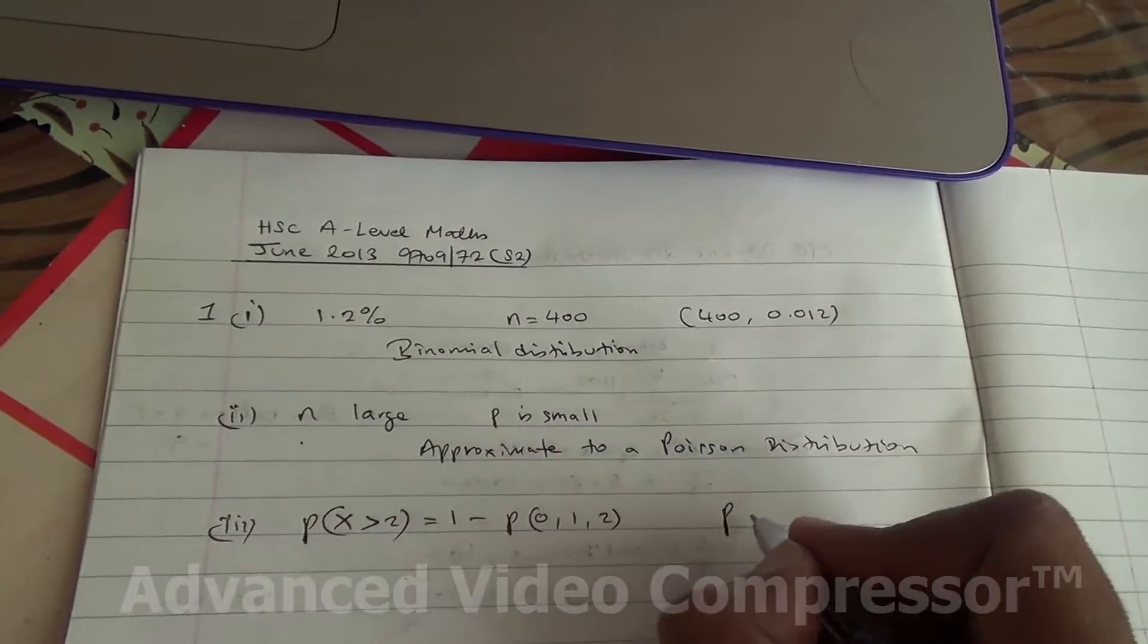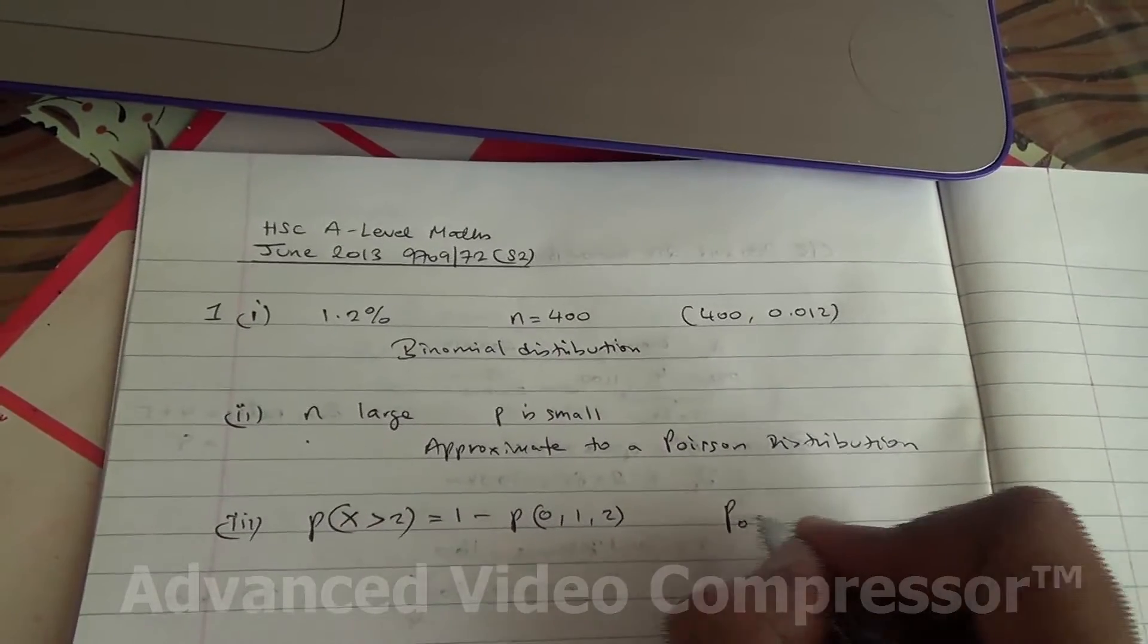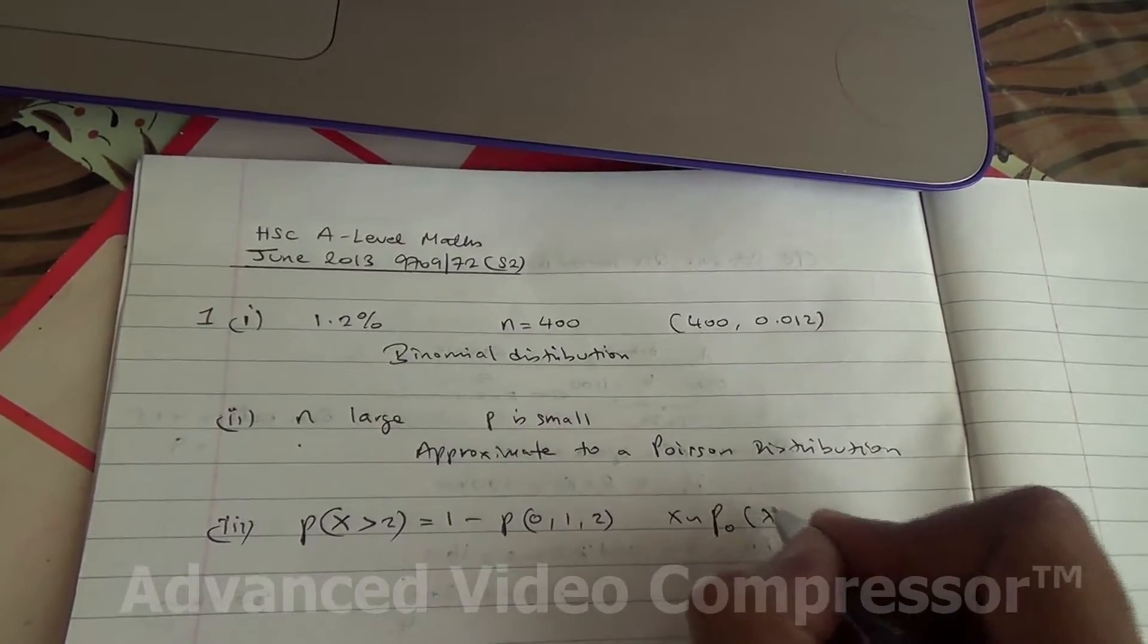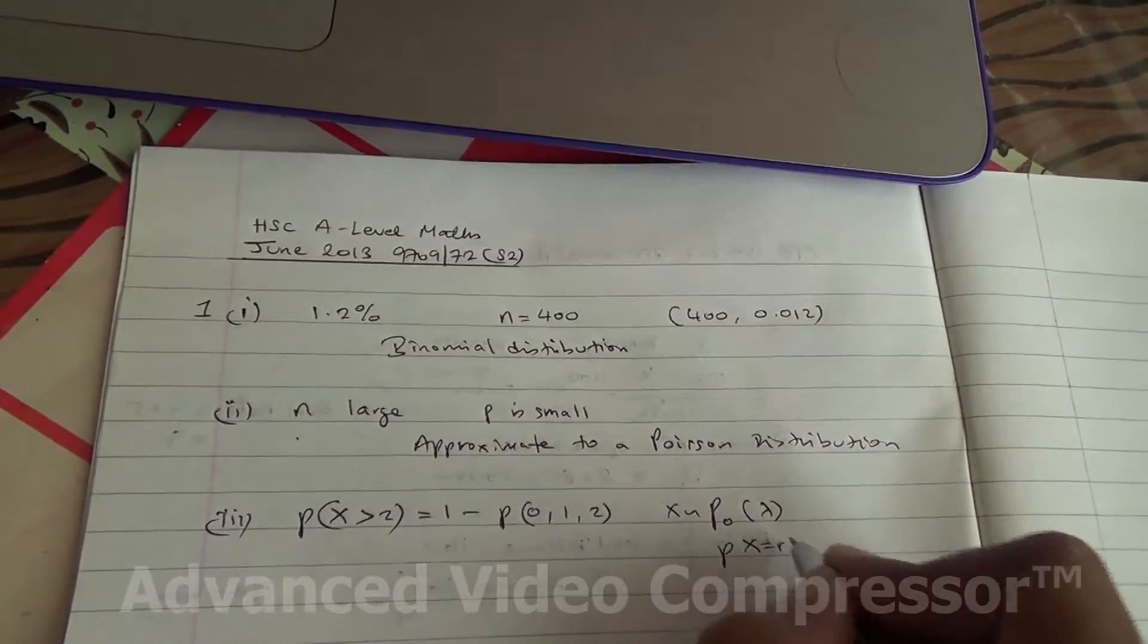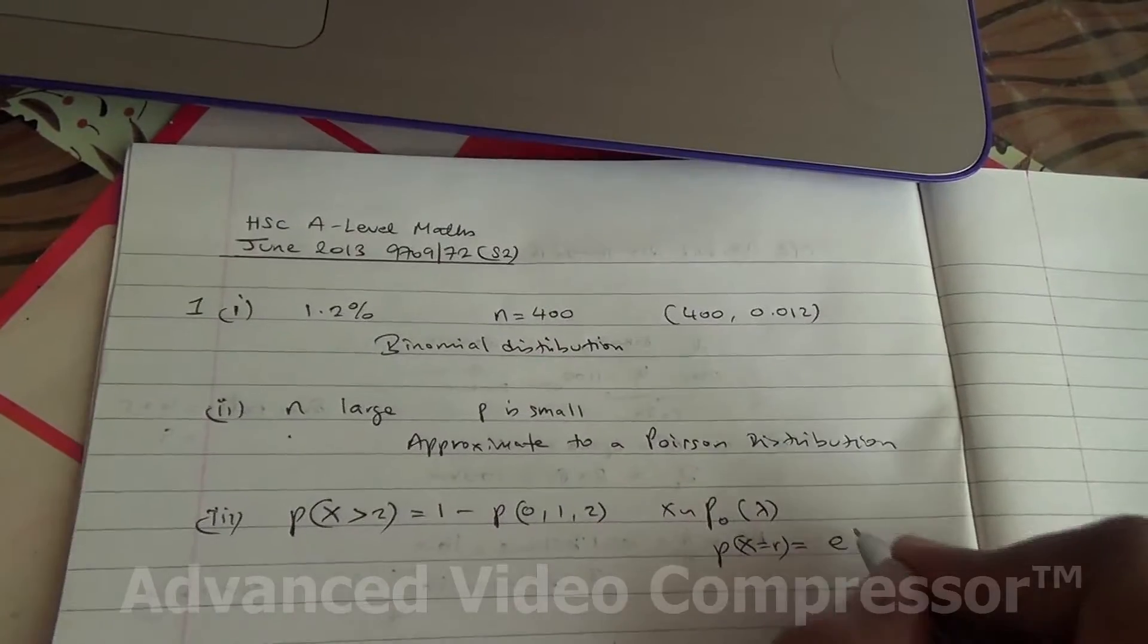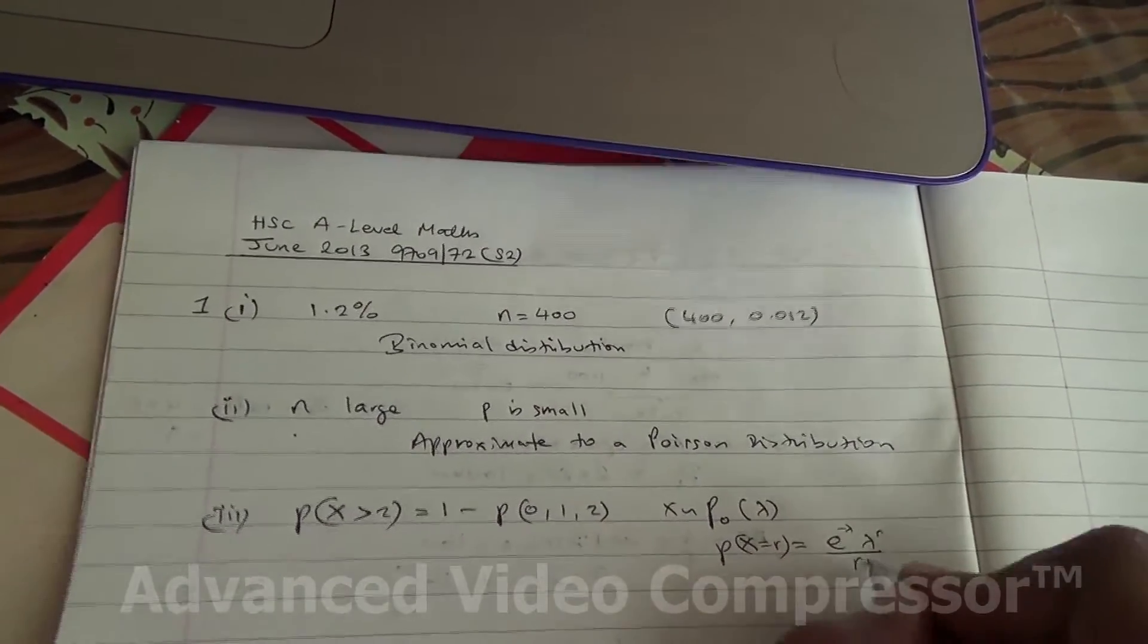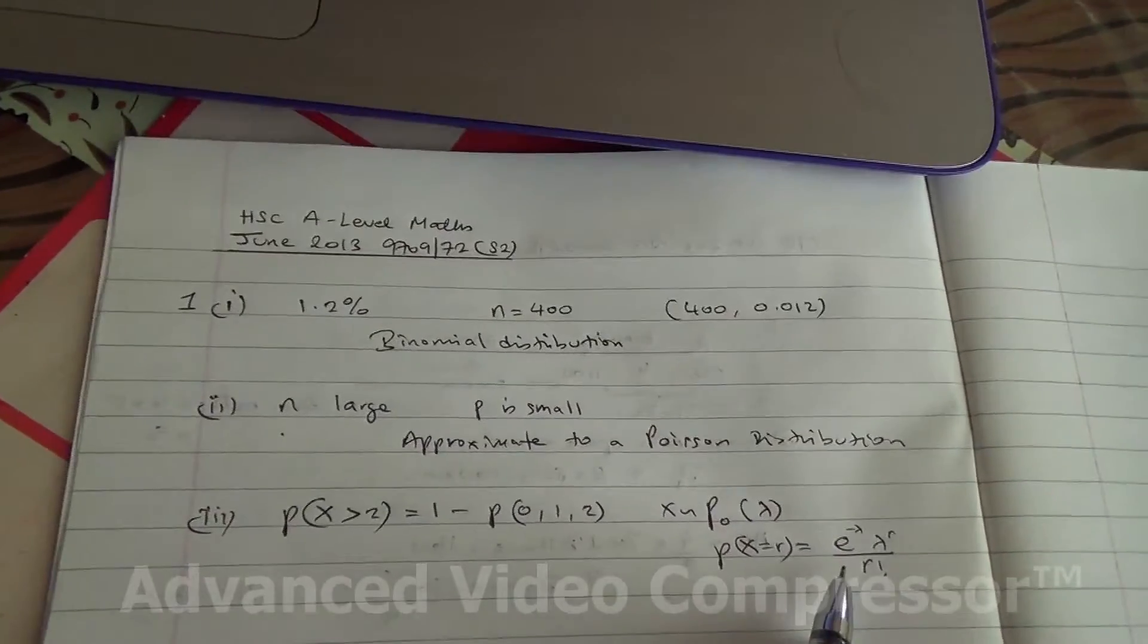Because it is a Poisson distribution, x follows a Poisson distribution with mean lambda. Probability of x is equal to r is going to be e to the power of minus lambda times lambda to the power of r over r factorial.